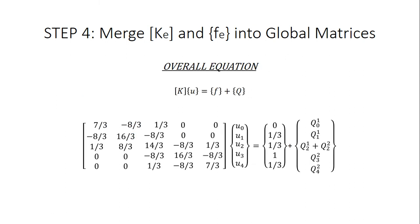We plug everything into the overall equation, which is the global stiffness matrix K times our displacements U equals F plus Q, where Q represents our forces. The global stiffness matrix, the displacement vector at each node, and the global F matrix plus the Q matrix are assembled, and the treatment of Q will be addressed in the next step.